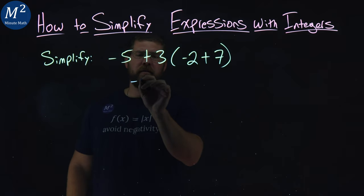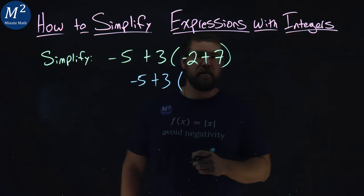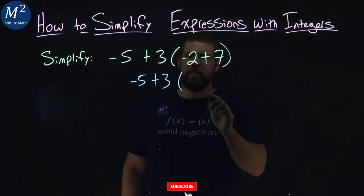Well, let's rewrite everything else: negative 5 plus 3, and then negative 2 plus 7 comes out to be a positive 5.